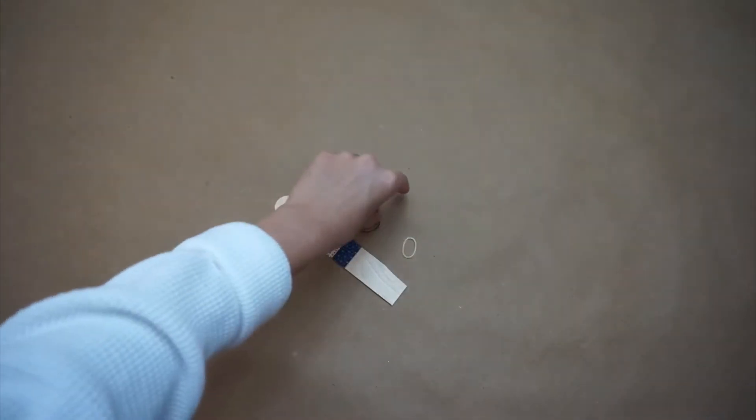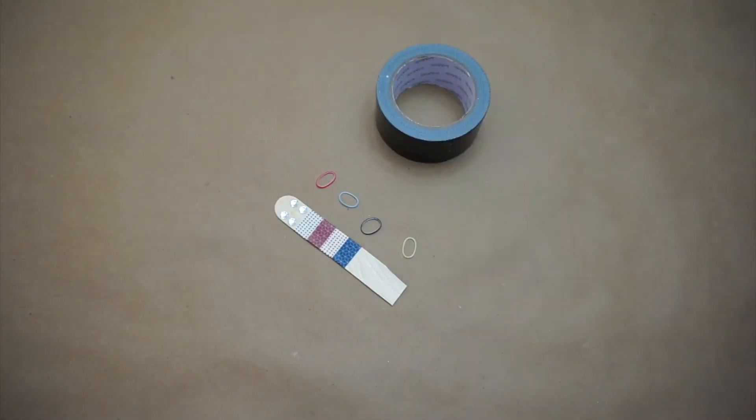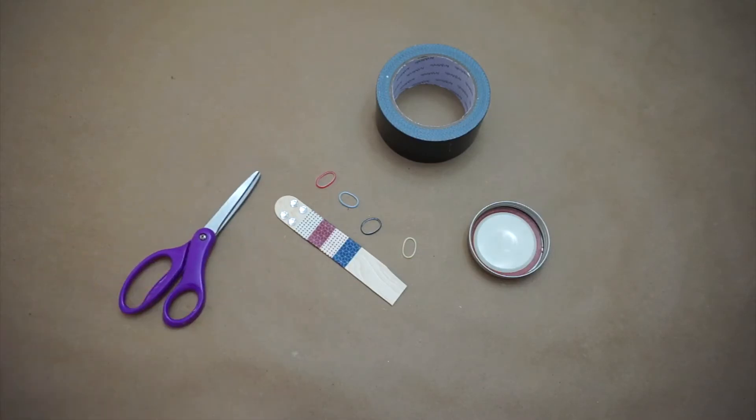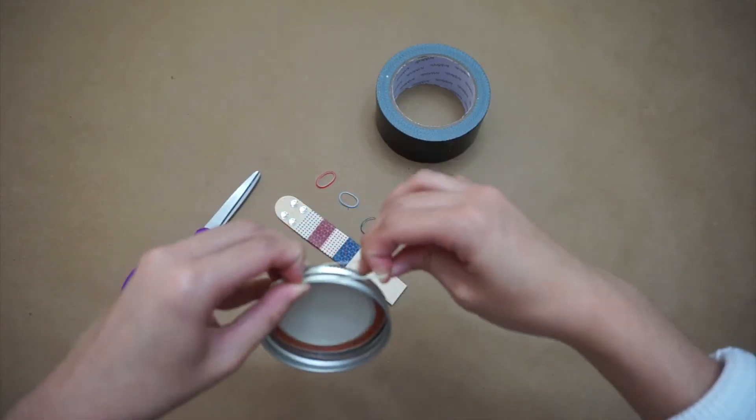Next, we're going to use the four loom bands, duct tape, lid, and scissors to attach the loom bands onto the lid.